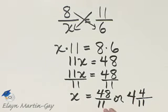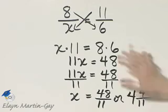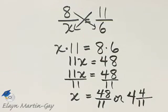So here is my solution, 48 over 11, or 4 and 4 elevenths. This is the value, they're the same, that makes this a true proportion.